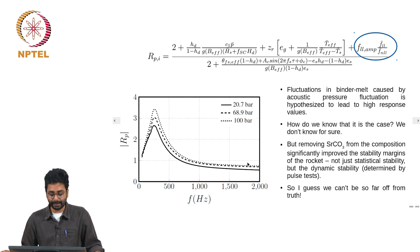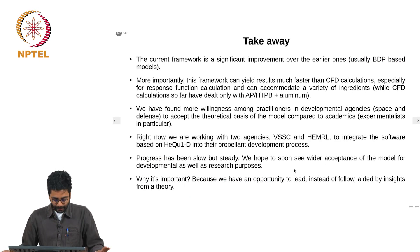How do we know that this is the case? Well, cannot know for sure, but removing strontium carbonate from the composition significantly improves the stability margins of the rocket—not just statistical stability but also dynamic stability. That means that you can pulse the rocket, create a pressure disturbance and see that it decays, the pulse decays with time instead of growing. So I guess this cannot be far from the truth.